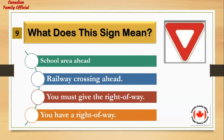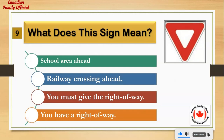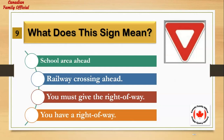What does this sign mean? Number 1: school area ahead. Number 2: railway crossing ahead. Number 3: you must give the right of way. Number 4: you have the right of way. And the answer is: you must give the right of way.